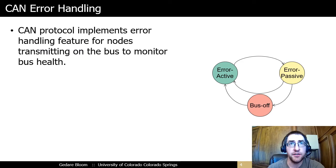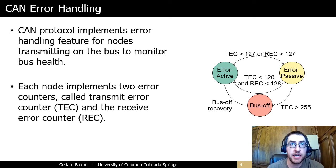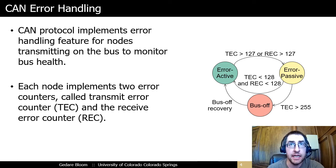One of the key features of CAN is its fault confinement and error handling mechanism. Each CAN controller implements a state machine and transitions itself among three states: error-active, error-passive, and bus-off. The state transitions are defined in terms of two counters: the transmit error counter, or TEC, and the receive error counter, or REC. Each time a controller detects that a message it is transmitting encountered a bus error, the controller increments its TEC by 8. Each time a controller detects an error in a message it is not transmitting, it increments its REC by 1. Each successful transmission reduces the TEC by 1 for the transmitter and the REC by 1 for the other controllers that received the message successfully.